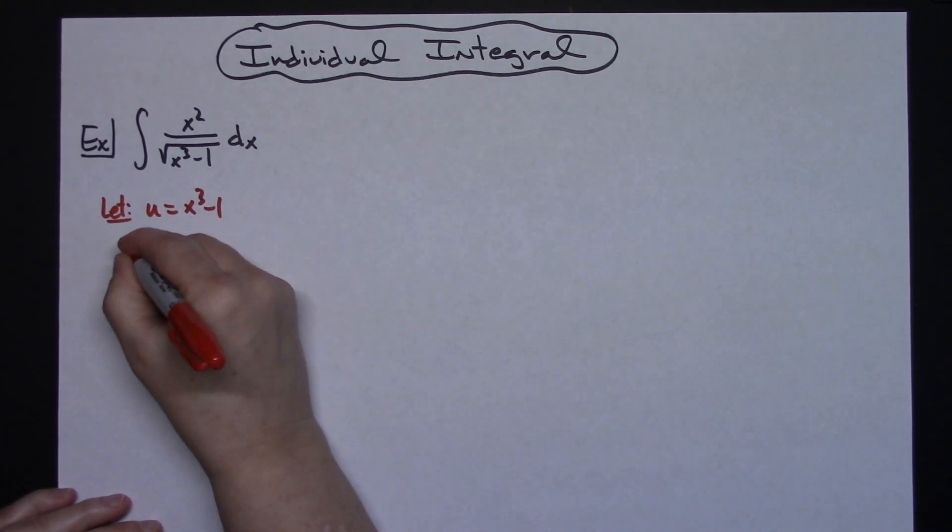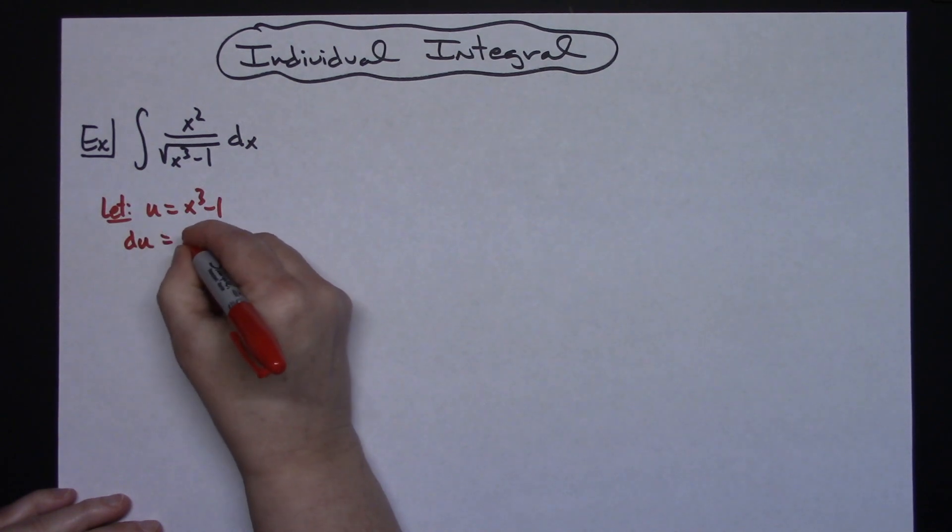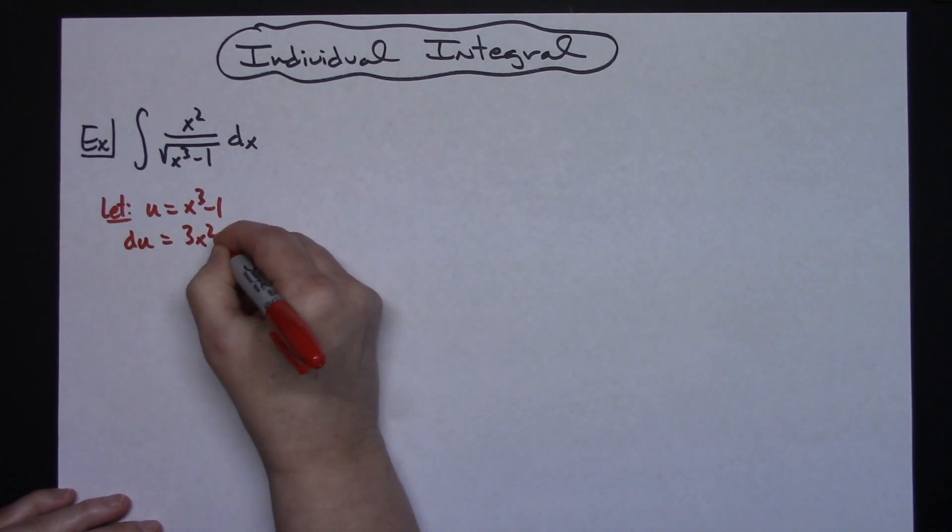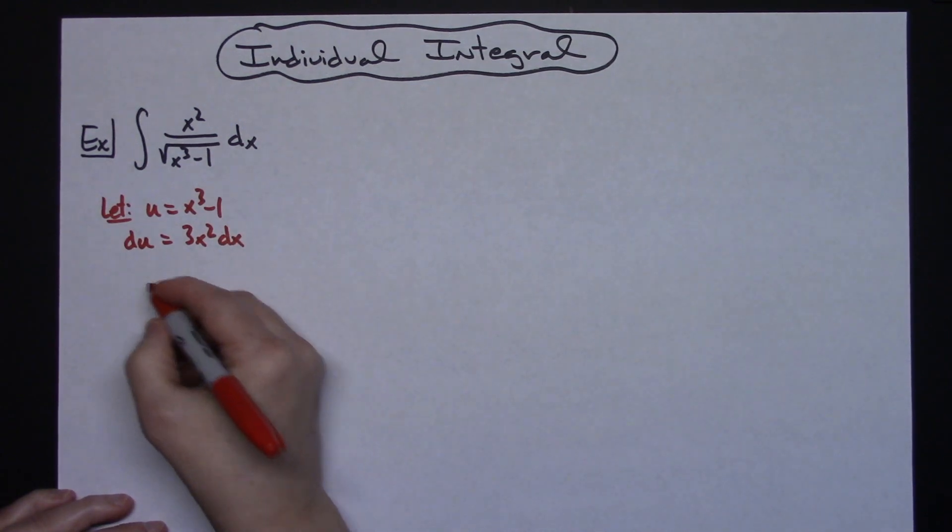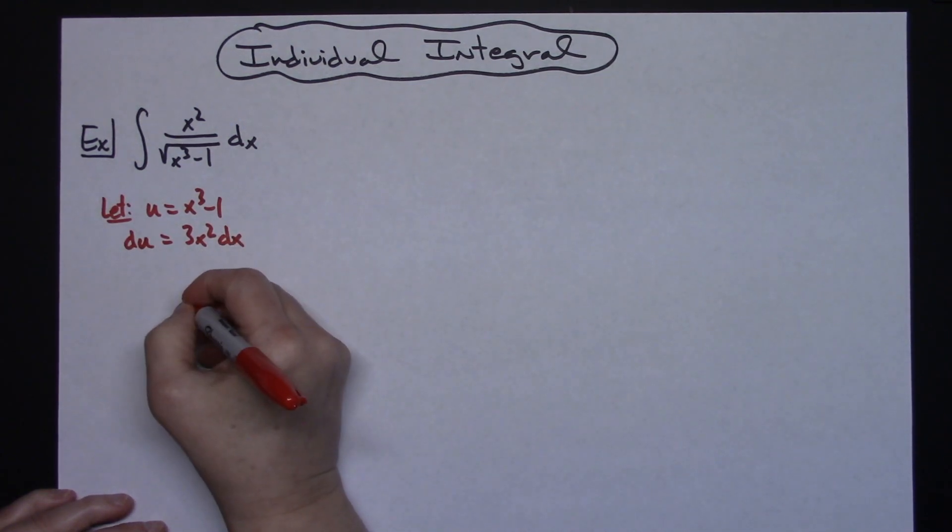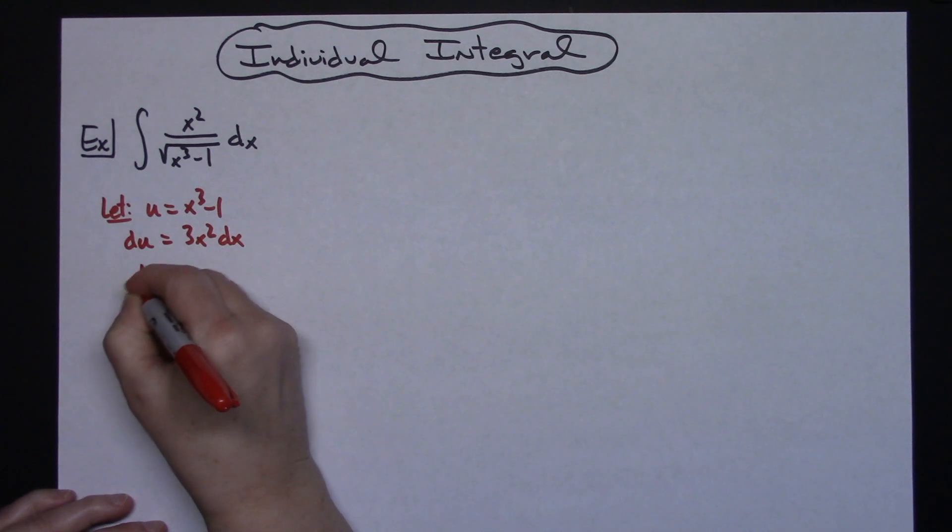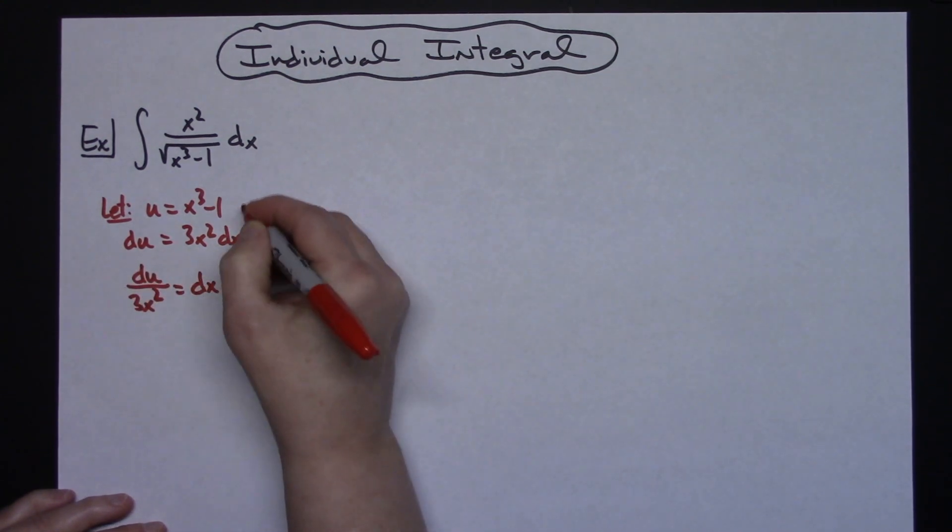We're going to take the derivative of both sides. So du = 3x² dx. We're going to go ahead and solve for dx. We'll divide both sides by 3x², so du/(3x²) = dx.